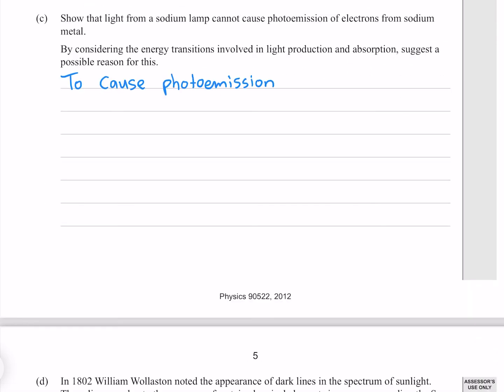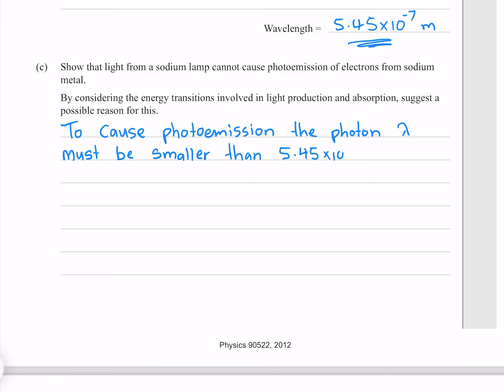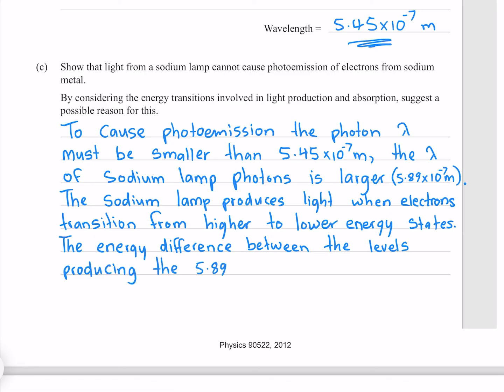To cause photoemission, the photon wavelength must be smaller than 5.45 times 10 to the minus 7 meters. The wavelength of sodium lamp photons is larger, 5.89 times 10 to the minus 7 meters. The sodium lamp produces light when electrons transition from higher to lower energy states. The energy difference between the levels producing the 5.89 times 10 to the minus 7 meter wavelength would need to be larger to produce photoemission.